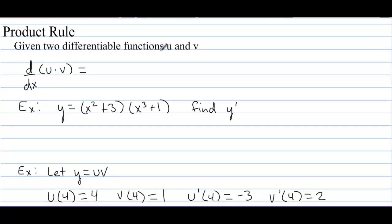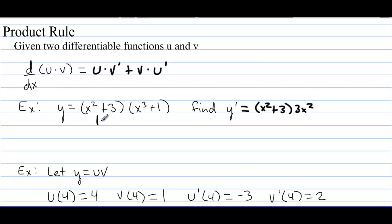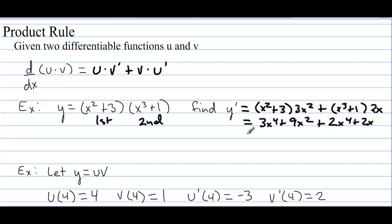Here we have the product rule. Given two differentiable functions u and v, the derivative of u times v is the first times the derivative of the second, plus the second times the derivative of the first. For example, with two separate functions multiplied together, we go first times derivative of second plus second times derivative of first, then clean it up. This gives 3x to the 4th plus 9x squared plus 2x to the 4th plus 2x, which equals 5x to the 4th plus 9x squared plus 2x.